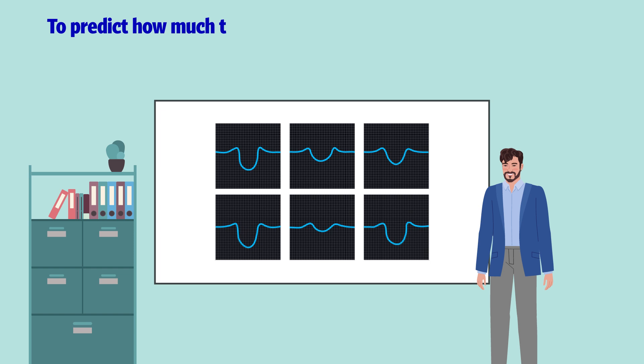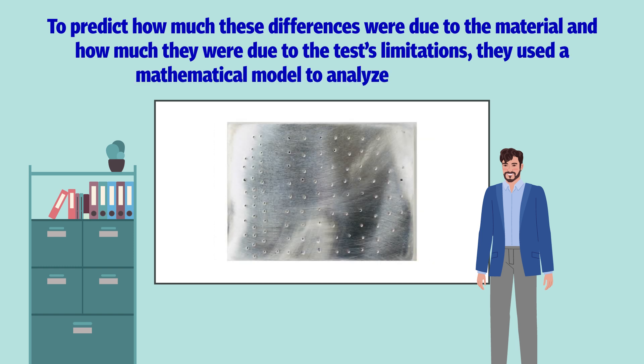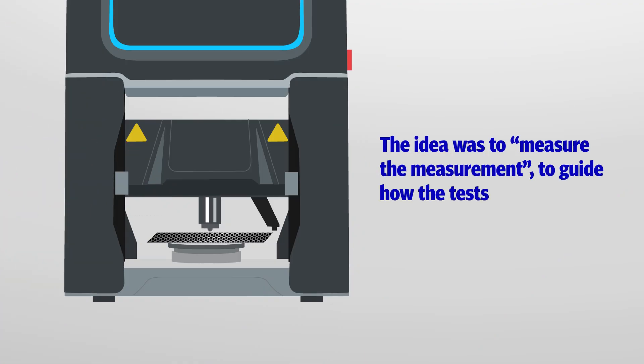To predict how much these differences were due to the material and how much they were due to the test's limitations, they used a mathematical model to analyze the 99 results. The idea was to measure the measurement to guide how the tests might be used in demanding situations.